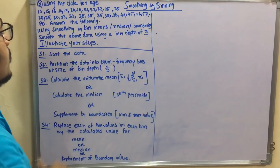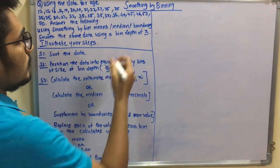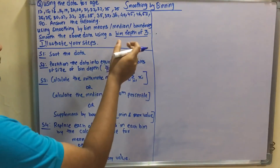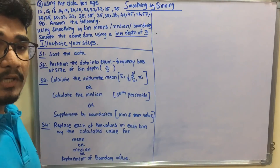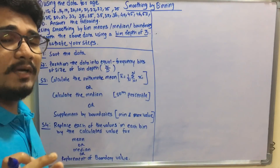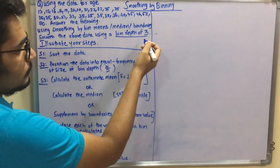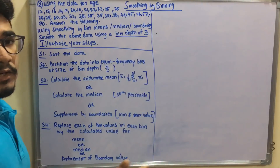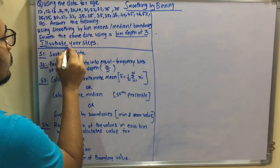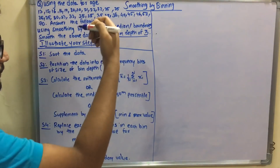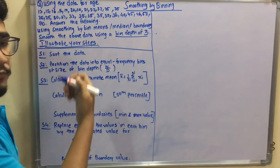We have to smooth the data using a bin depth of three, and illustrate our steps. Bin depth of three means each bin or bucket can contain only three items. If the bin depth were four, each bucket would contain four items. We also need to show each step of the solution.